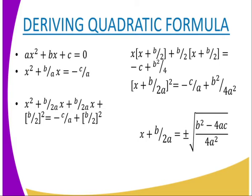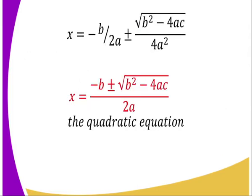Now we find the square root on both sides. That gives us x plus b over 2a equals plus or minus the square root of (b squared minus 4ac) divided by 4a squared. We then take b over 2a to the other side, so it becomes negative. That gives us x equals negative b over 2a plus or minus the square root of (b squared minus 4ac) divided by 4a squared.